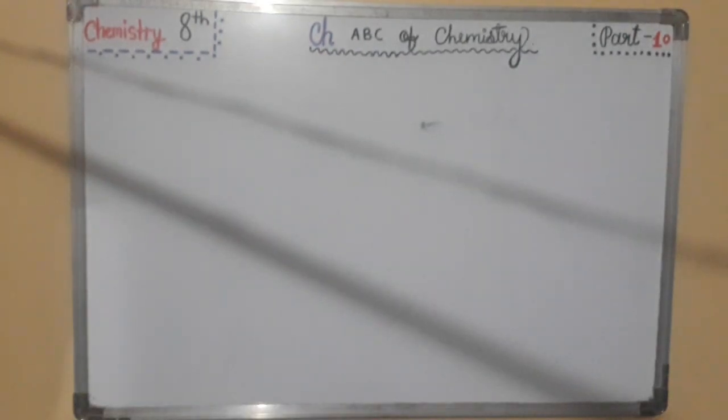Now, our topic is chemical formula. We know the numbers from 0 to 9. By combining these numbers in different ways, we get all the numbers in mathematics.